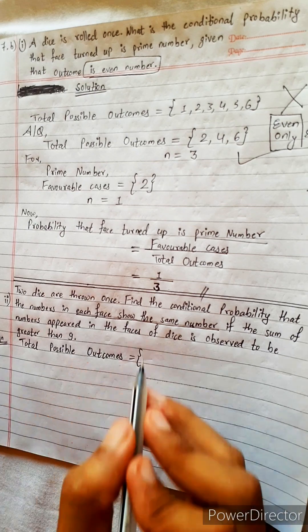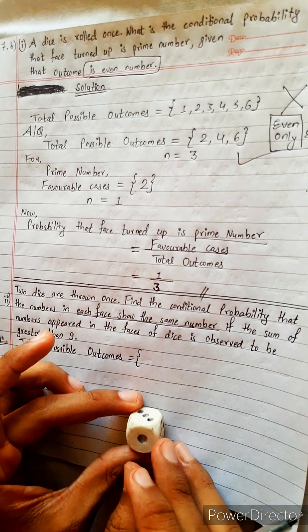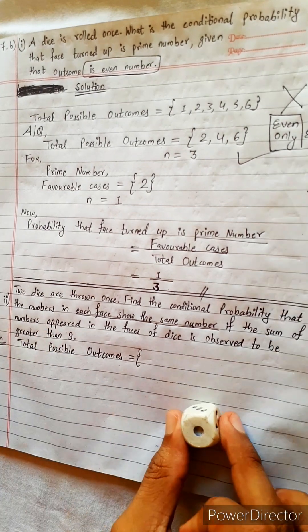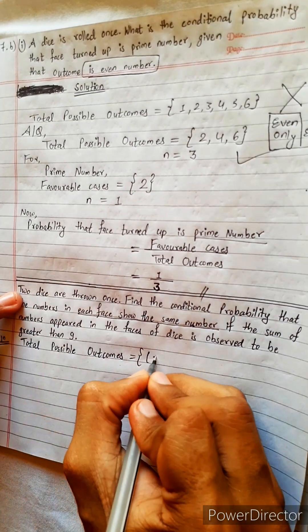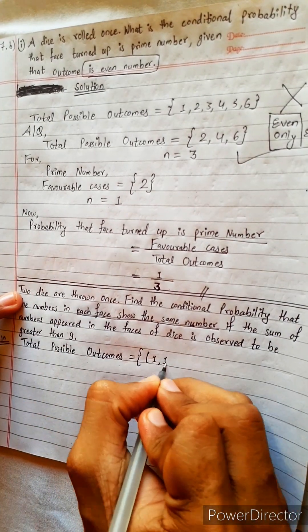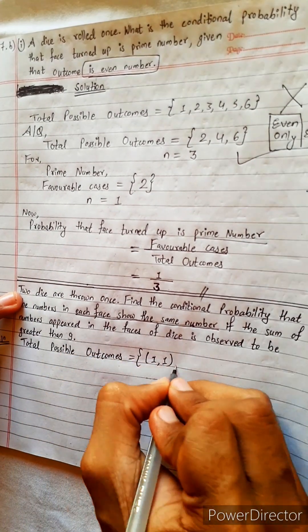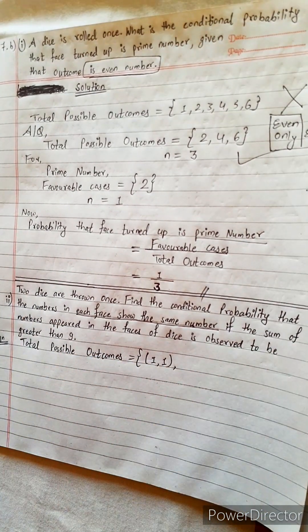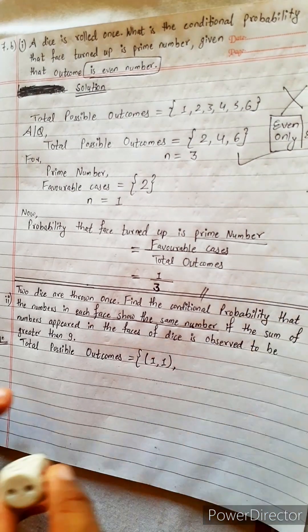Each face saw the same number. Suppose the first dice shows 1 and the other dice also shows 1. Two dice are thrown — both faces show the same number. The first dice shows 1 and the other dice shows 1.